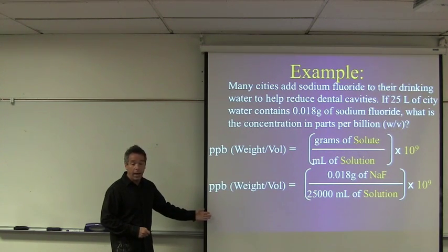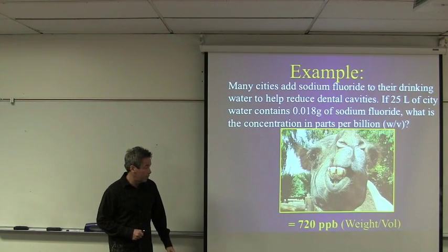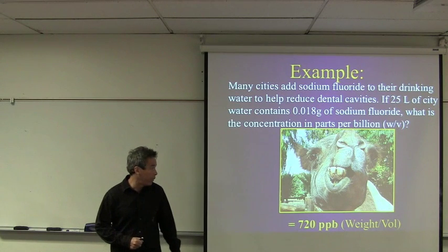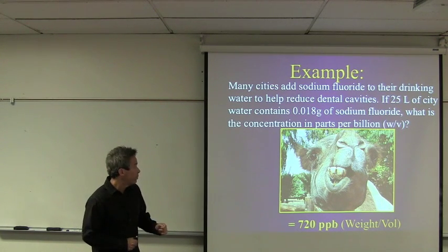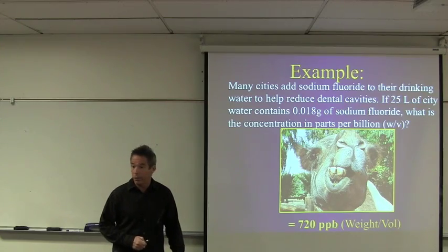And you'll get the answer. When you do that, you should get this number, 720 parts per billion weight to volume. Obviously, this fine-looking animal has not been drinking enough city water.